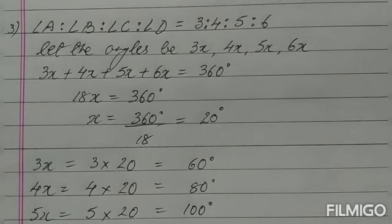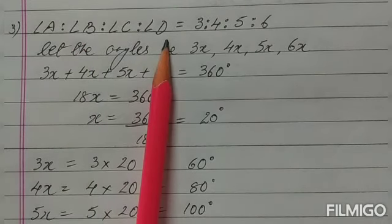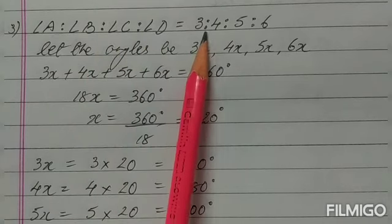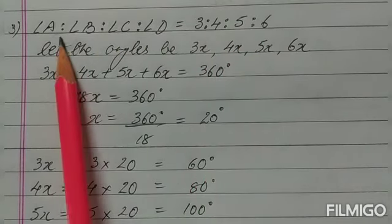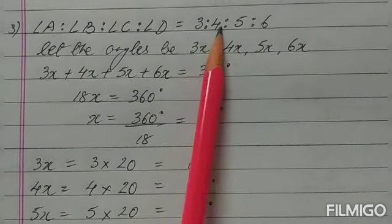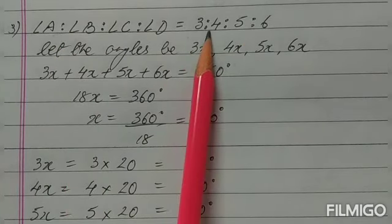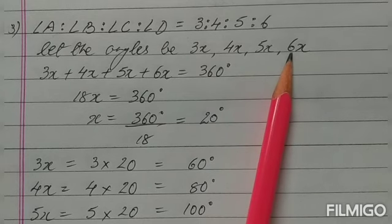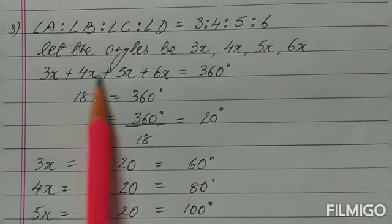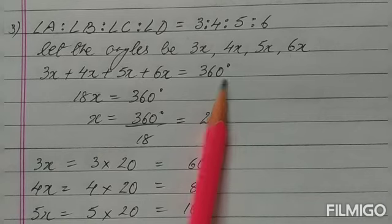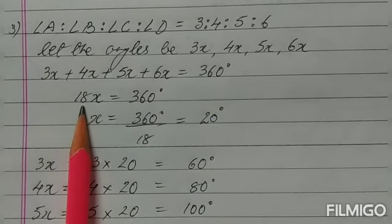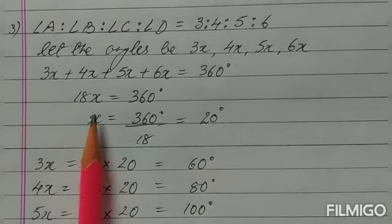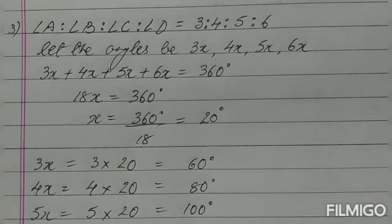In question number 3, the four angles of a quadrilateral are in the ratio 3:4:5:6. We have to calculate all four angles. Let the angles be 3X, 4X, 5X, and 6X. Adding all four should equal 360. Since they are like terms, 18X equals 360, so X equals 360 divided by 18, which comes out to be 20.